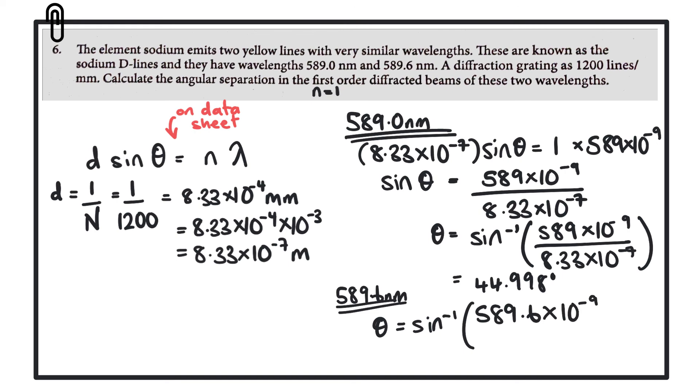Over the grating element, which is 8.33 by 10 to the minus 7. And that gives us a value of 45.056 degrees. So they're extremely close.